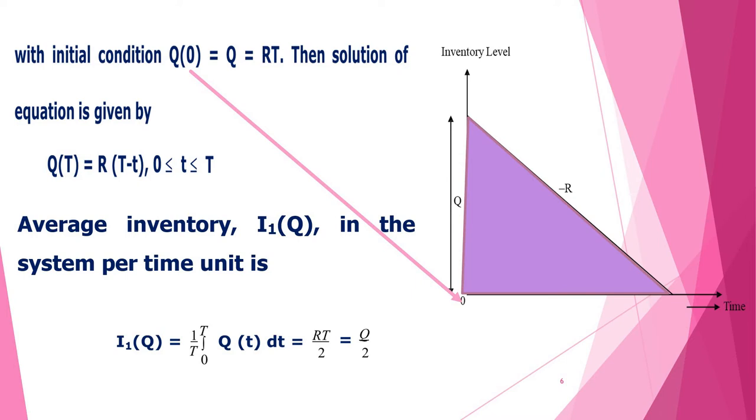Next step is to find average inventory I₁ in the system per time unit, and it is given by I₁ equals, because we wanted per time unit, so we have a factor 1/T, integration 0 to T Q(t) dt. Integrating R(T - t) with respect to small t between 0 to T gives RT/2, but we already know RT equals Q. So average inventory in the system per time unit is Q/2, which is given by the area, that is the purple shaded area.